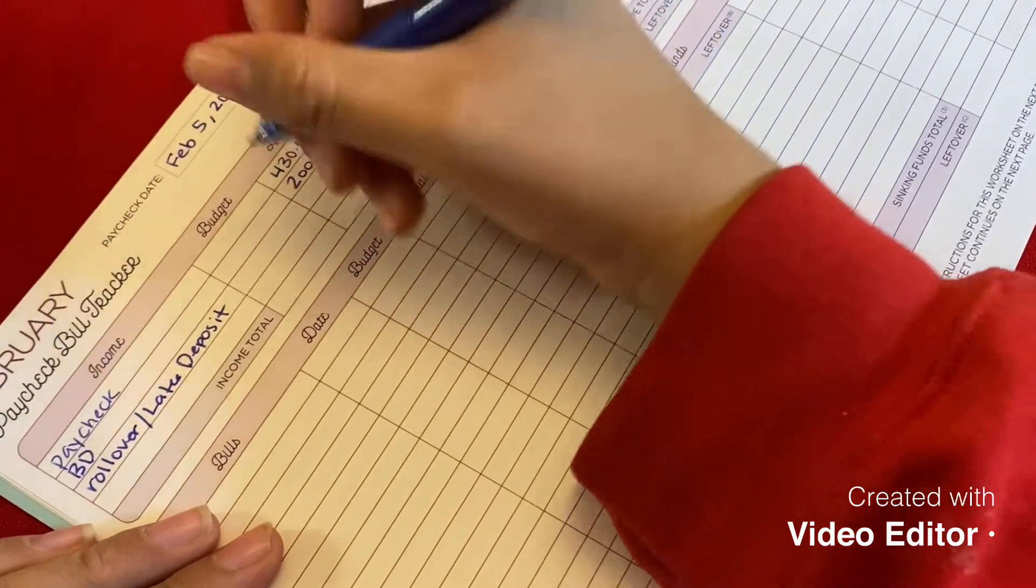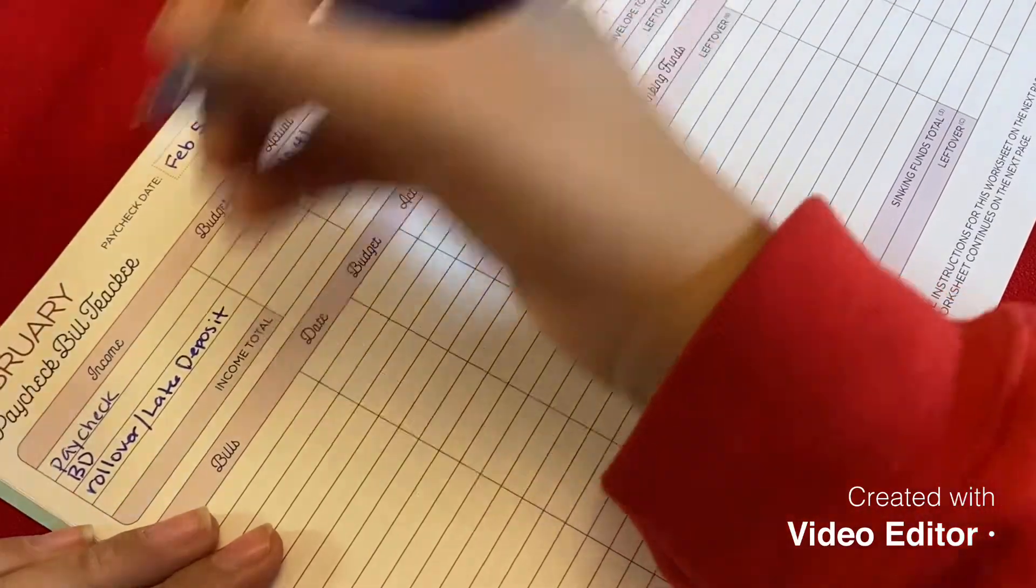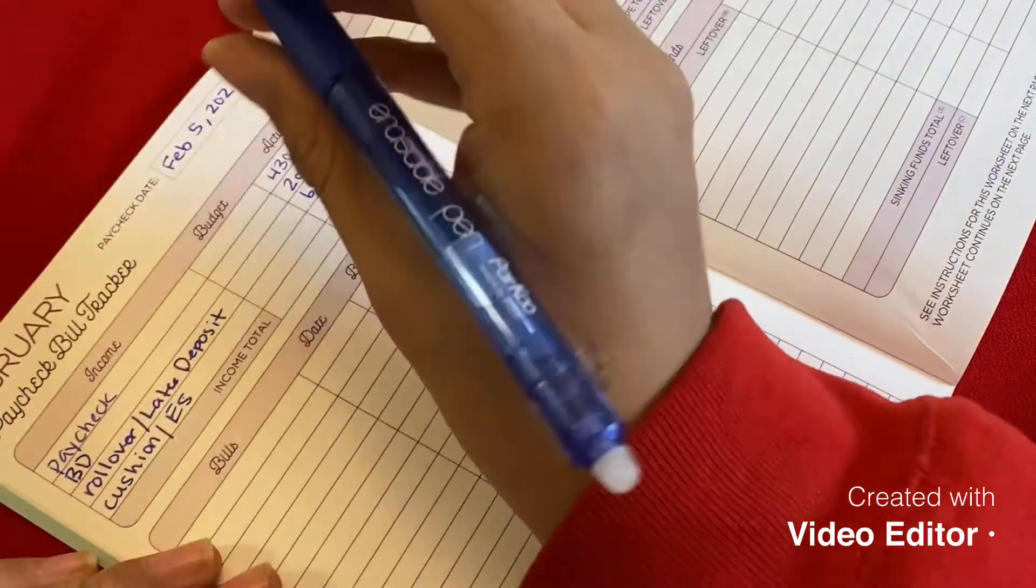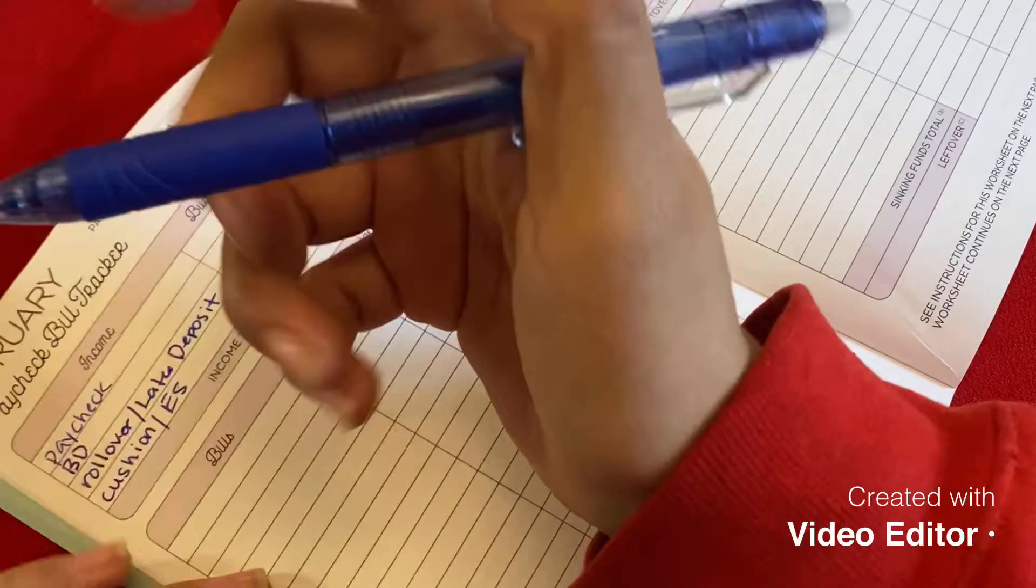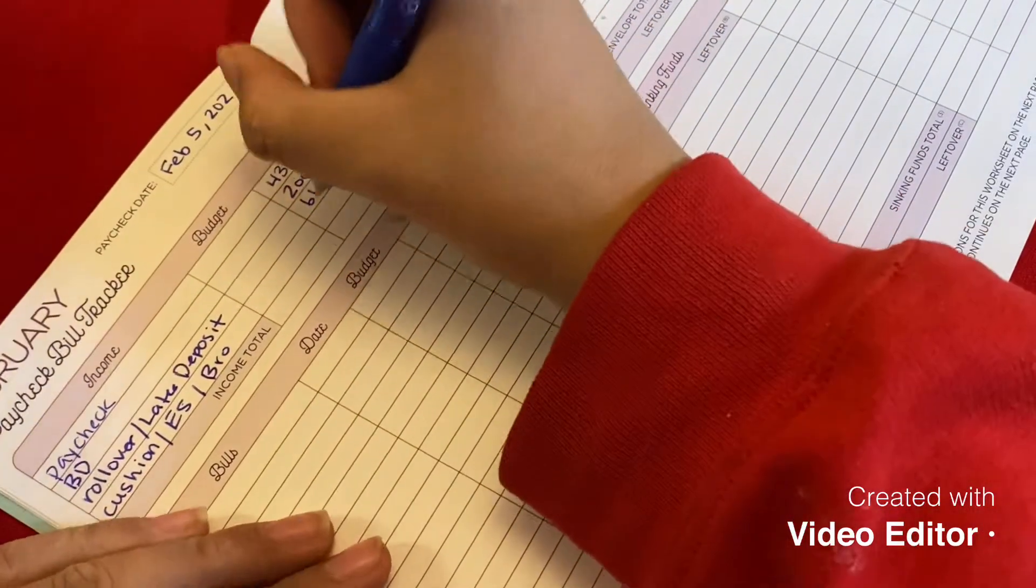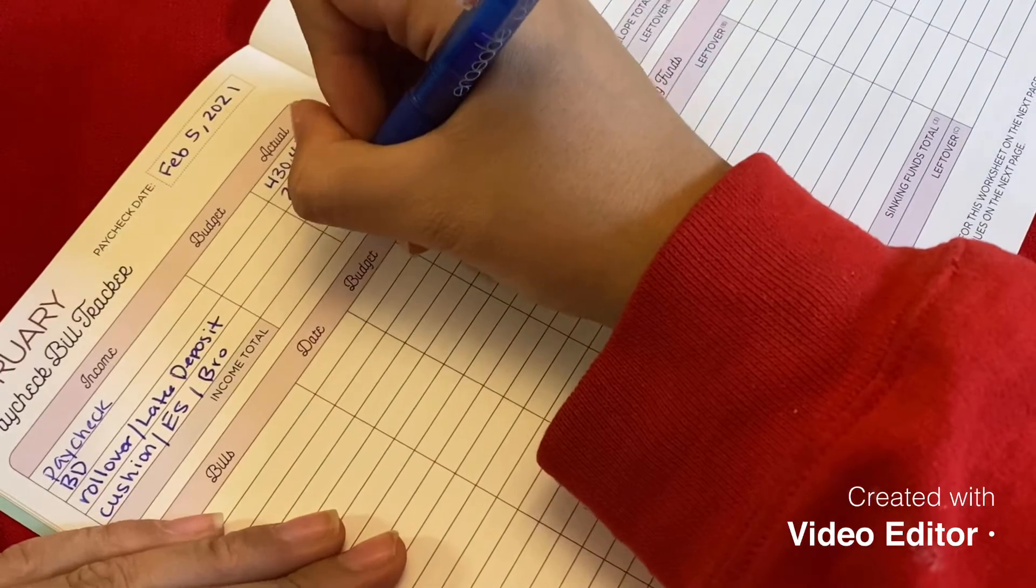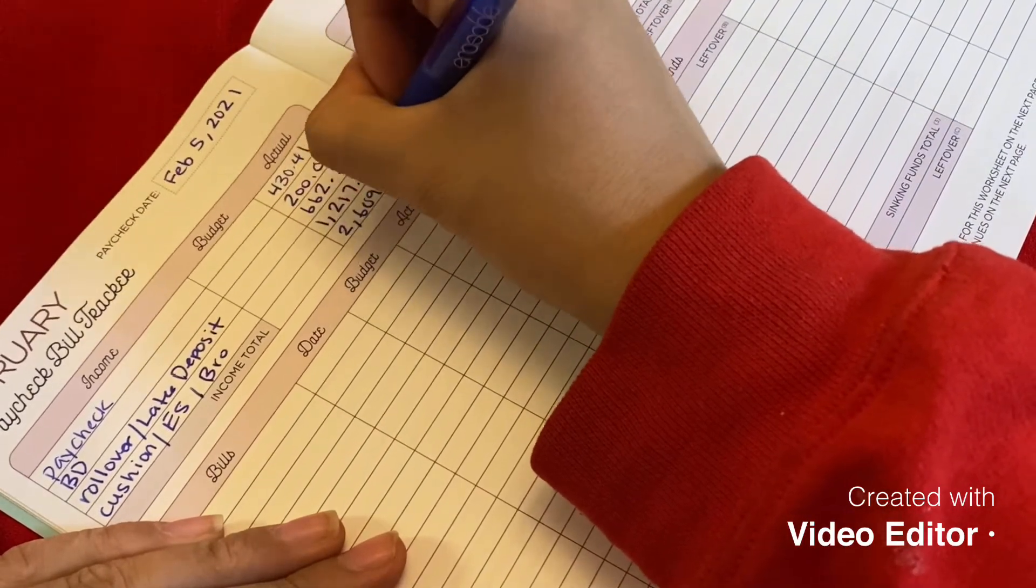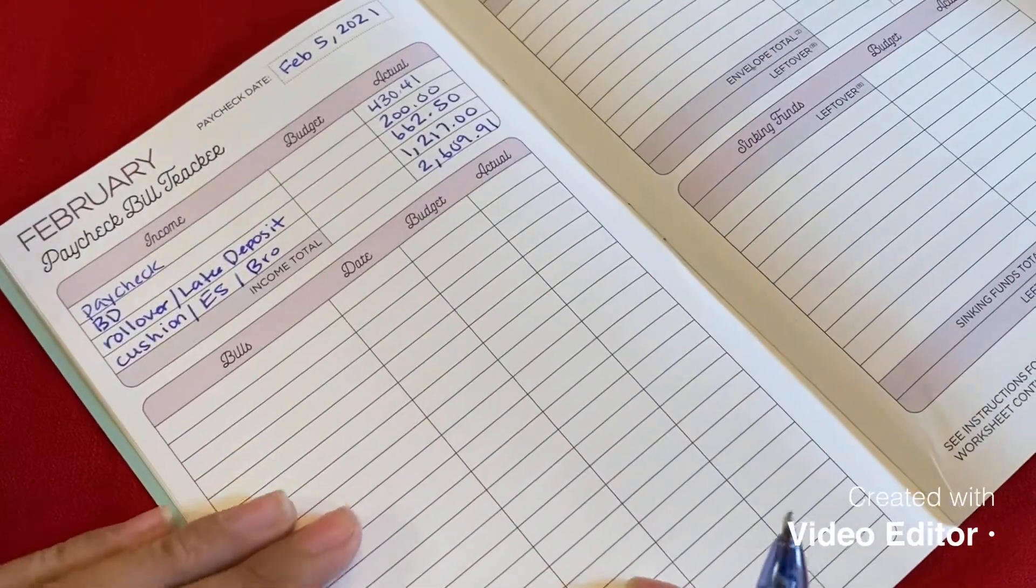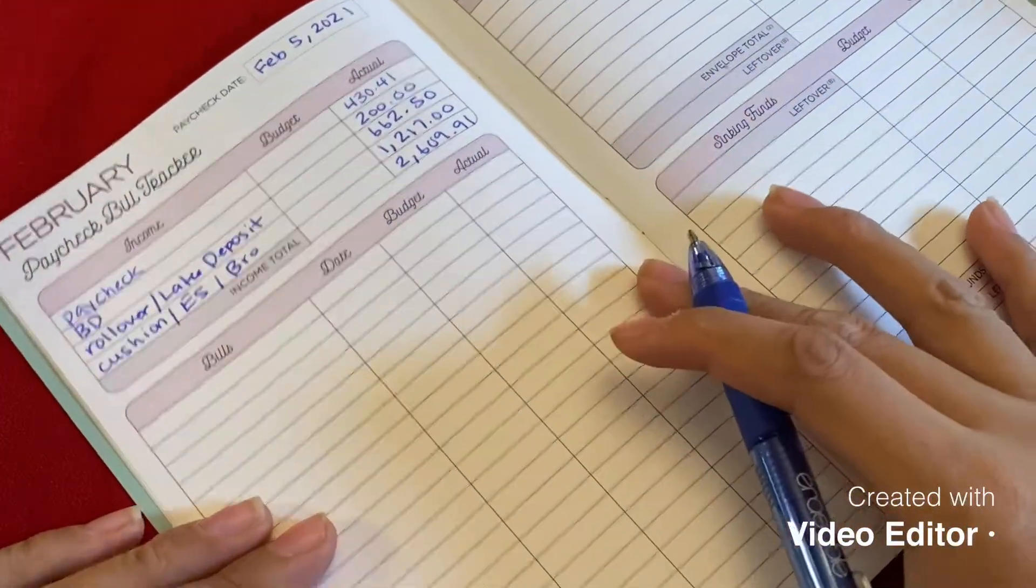It was $662.50. Then the cushion emergency fund but I call it the savings because I combined it together. And then my bro, I also used my account to get some Uber so I had the reimbursement from him. That all came out to $2,609.91. Well I just realized I didn't have my calculator, thank god I have this.